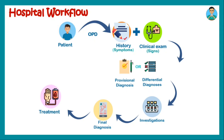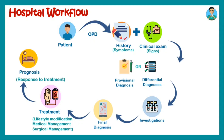Based on this final diagnosis, we proceed towards treatment. Treatment can be a lifestyle modification like salt restriction in your diet, exercising, or yoga; or medical management like prescribing the patient with pills, tablets, or ointments; or surgical management like a gallbladder, appendix, or thyroid surgery. After treatment, you look for the patient's response, which is known as prognosis. Following prognosis, the patient may get cured, the disease may be managed, or the patient may die.